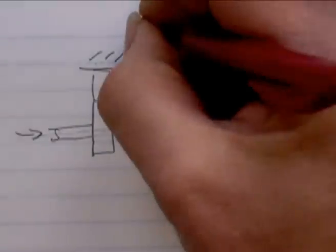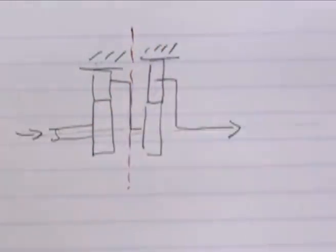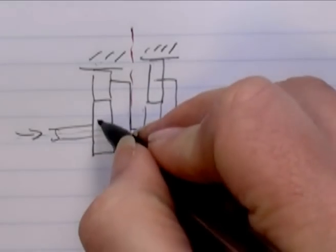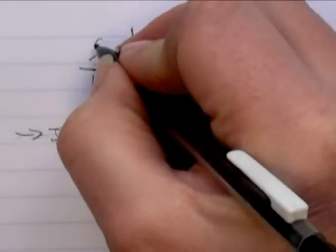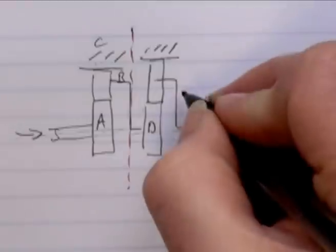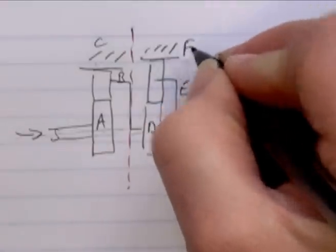So this gearbox we are going to divide into two parts. So if we call these A and call that B and C and D, E and F.